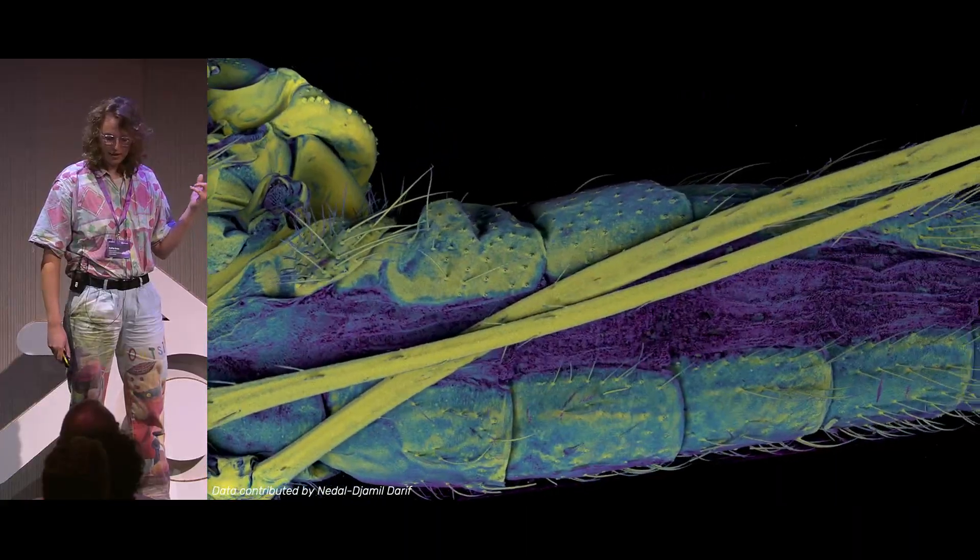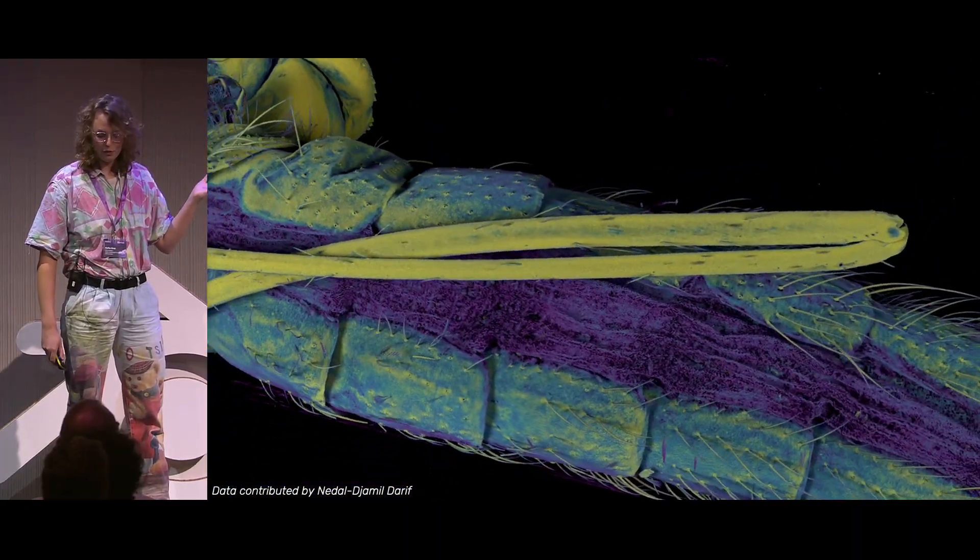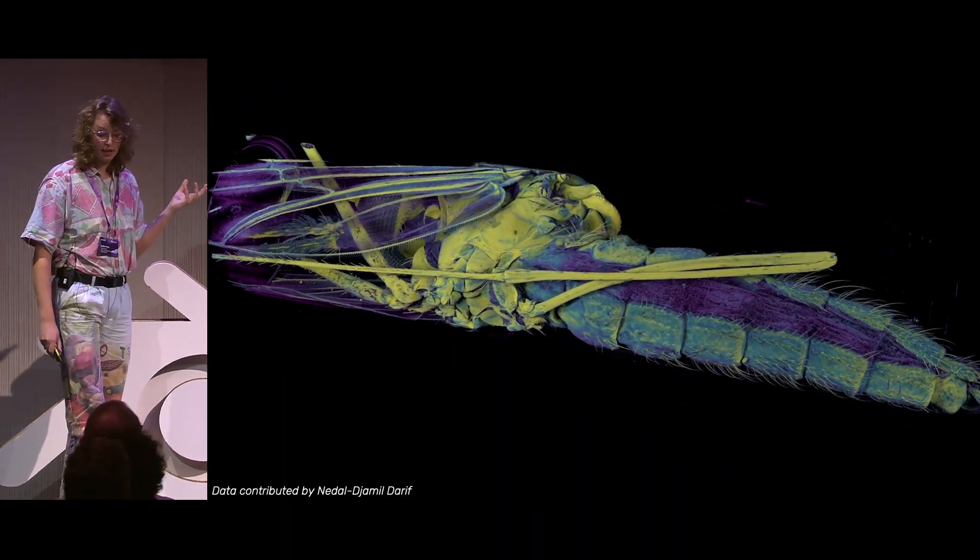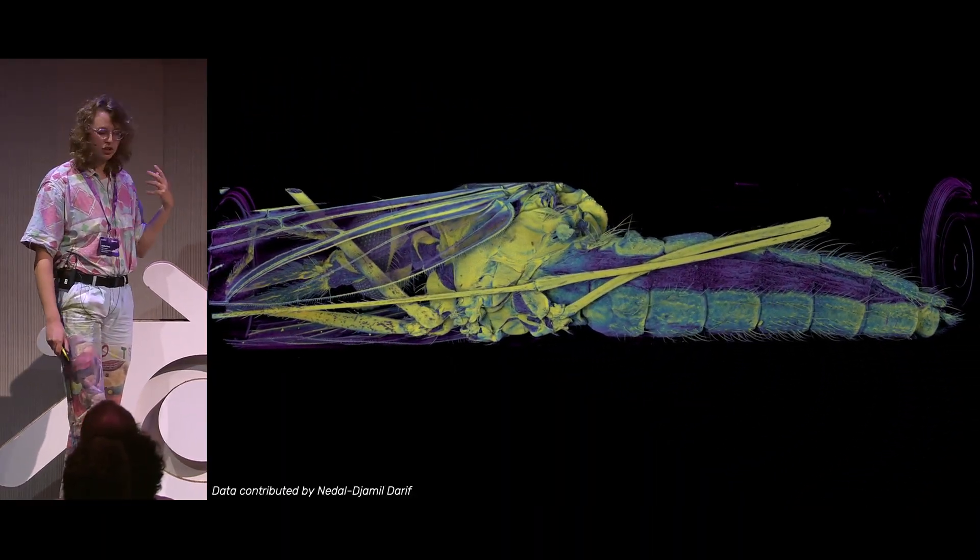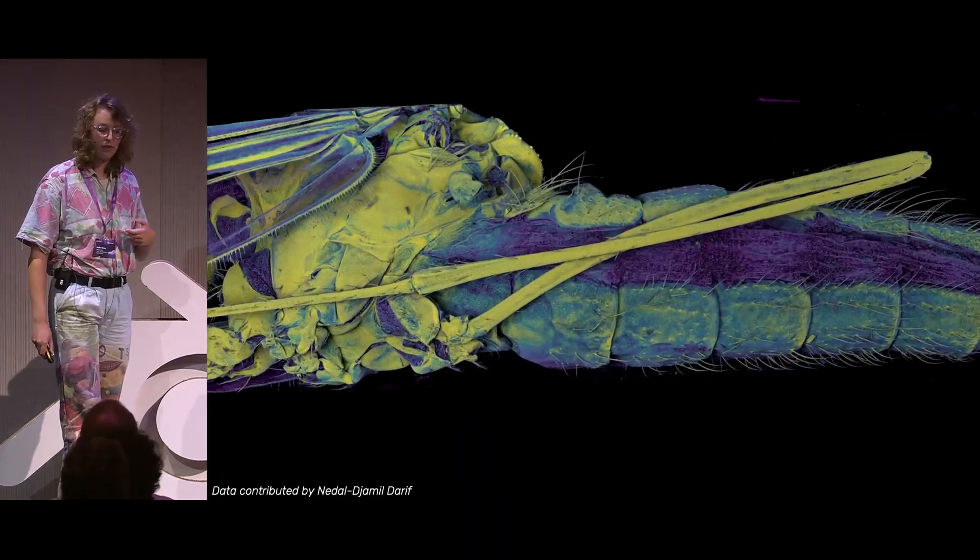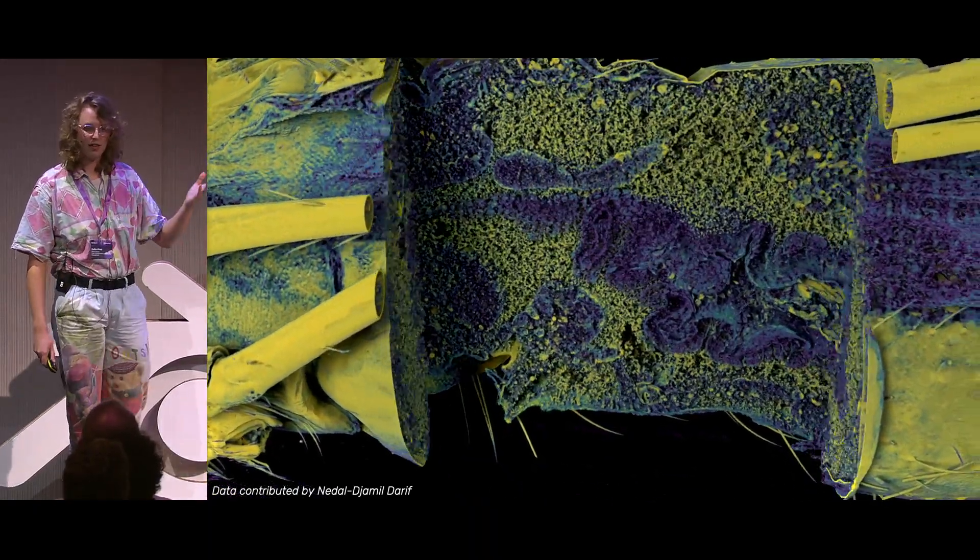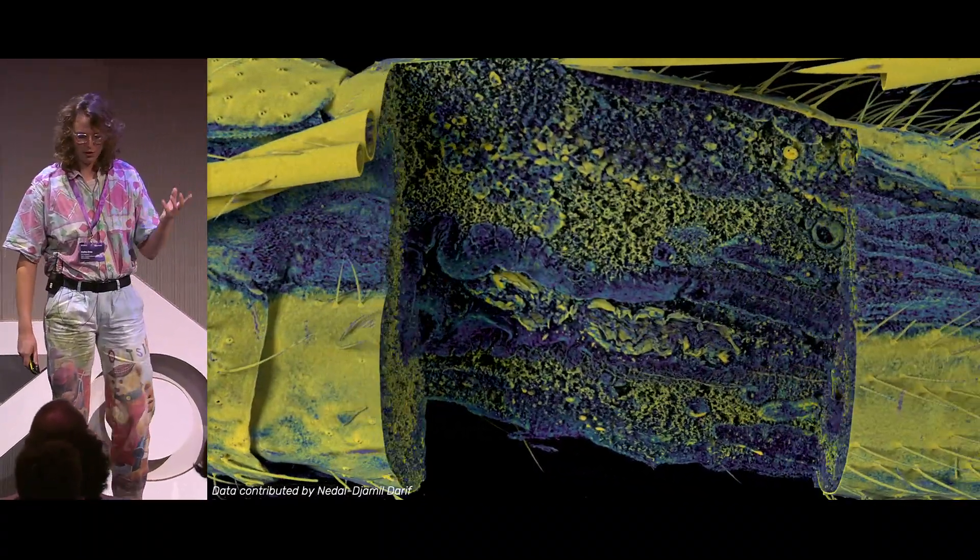This is a malaria-infected mosquito, and this is a 3D data set. So this was taken on the particle accelerator in Hamburg, and it is X-ray data. And this means that it's not just the outside of the image that we have. This is volumetric. So we can look inside of it and see the malaria developing inside the gut of the mosquito.